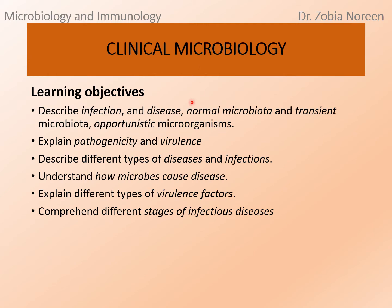By the end of this lecture you will be able to understand infection, disease, normal microbiota, transient microbiota and opportunistic microorganisms. You will be able to explain pathogenicity and virulence, understand different types of diseases and infections, how microbes cause disease, and what the different virulence factors of a pathogen are. You will also be able to understand the different stages of infectious diseases.